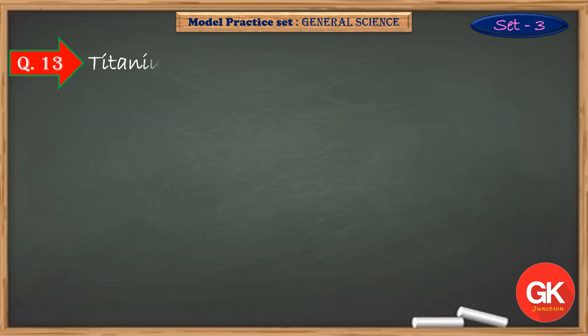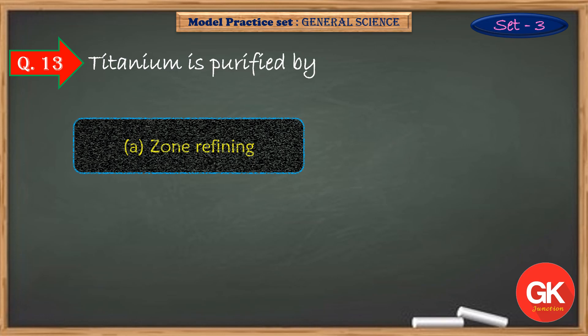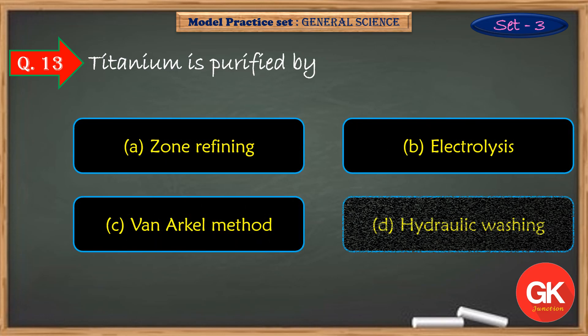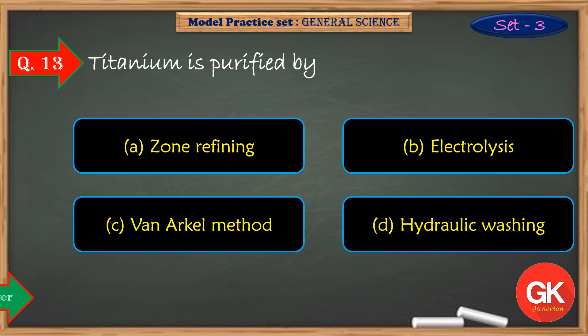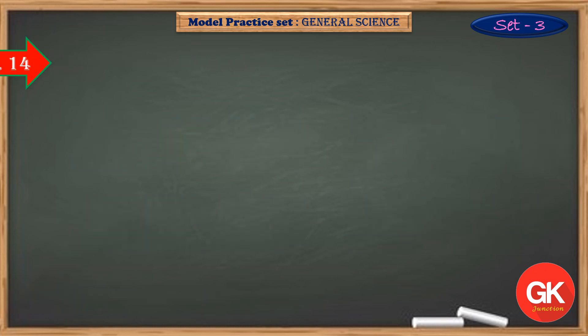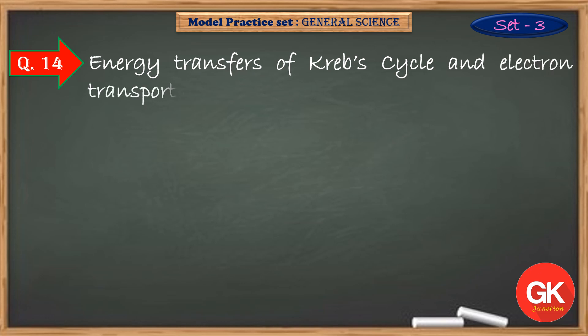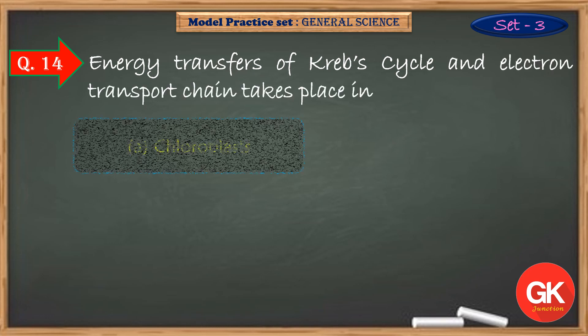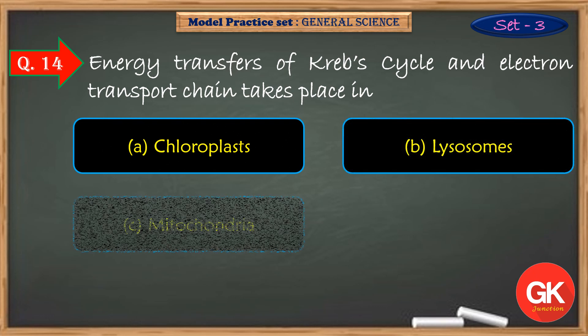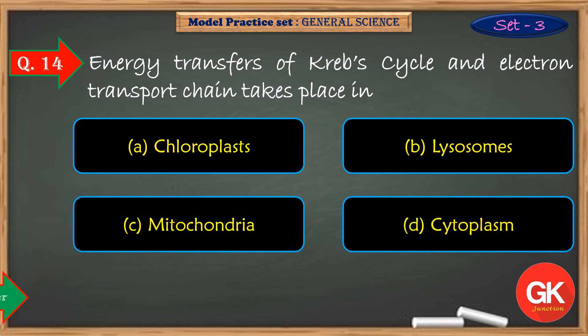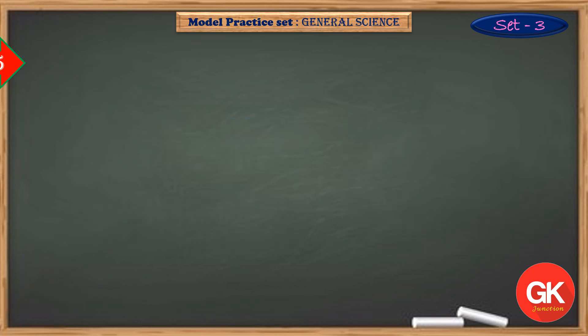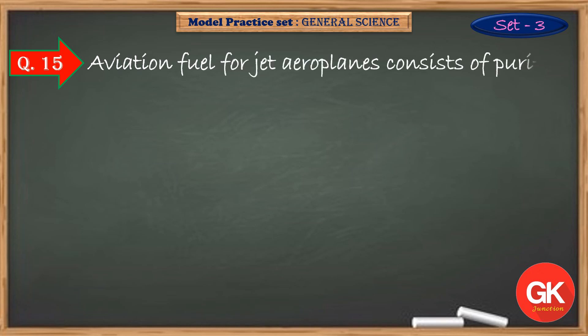Titanium is purified by. Energy transfers of Krebs cycle and electron transport chain takes place in. Aviation fuel for jet airplanes consist of purified.